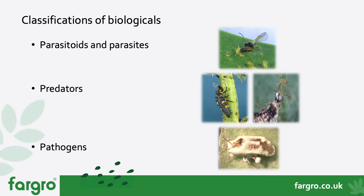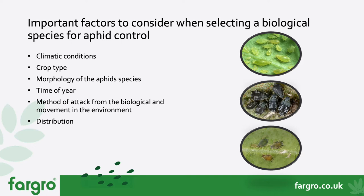In this talk, I'm mainly going to focus on biological species. Important factors to consider when selecting a biological species for aphid control: climatic conditions are really important, including temperatures and light levels — temperatures affect the activity of the biological and whether its lifecycle can compete with that of the pest. It's important that temperatures are not below or above the activity thresholds for these biologicals.